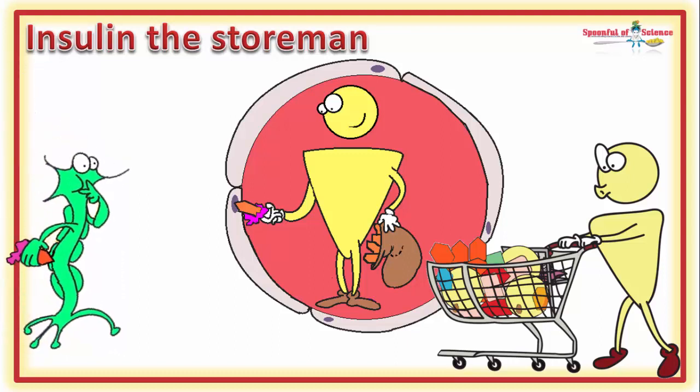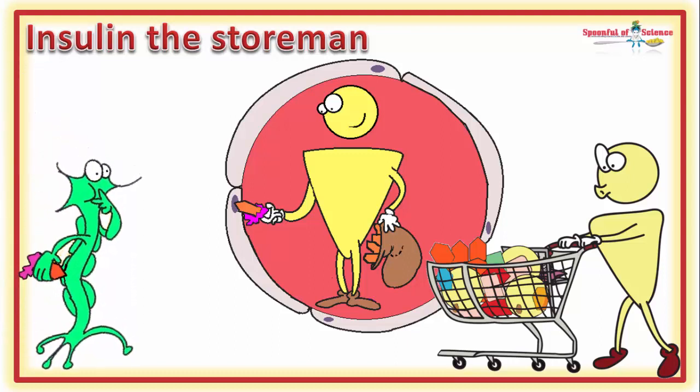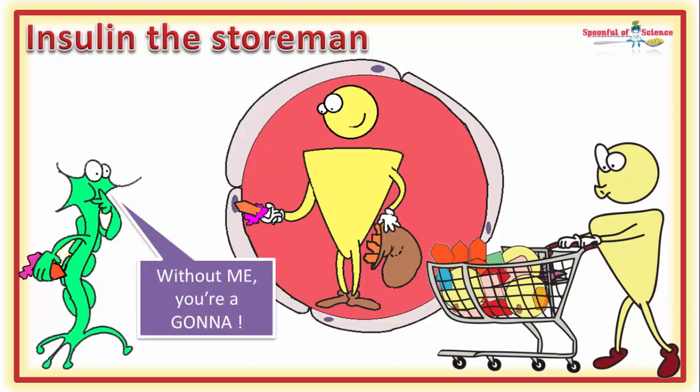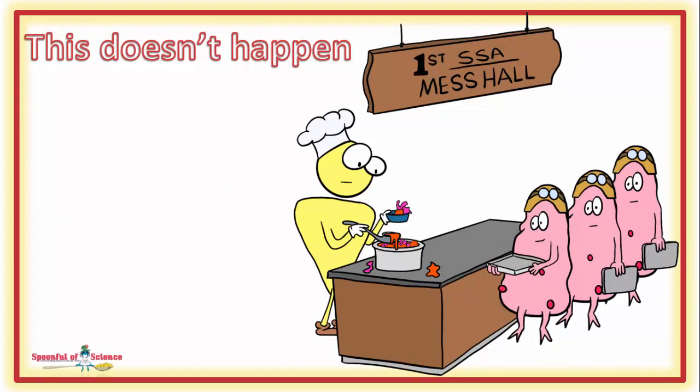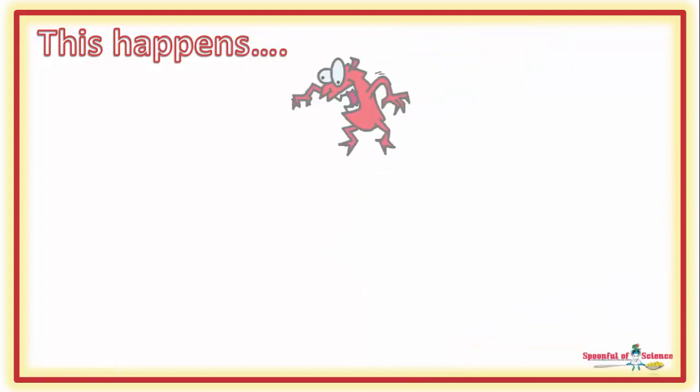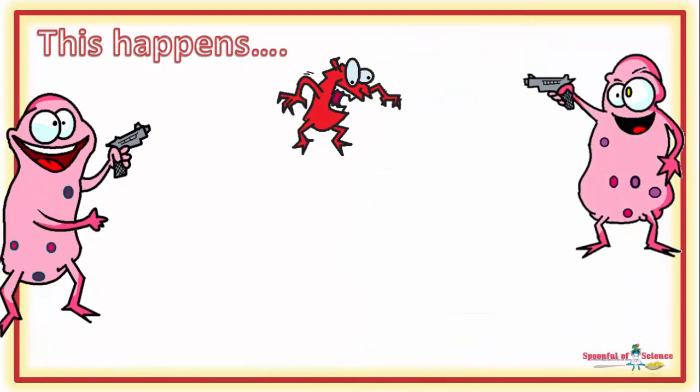Privileged cells don't ask insulin for their sugar ration. They simply take what they need, because well, they're essential. If your brain cells don't eat, you're toast. Likewise, the troops don't queue for their ration. They are too busy in the trenches, ensuring your survival.